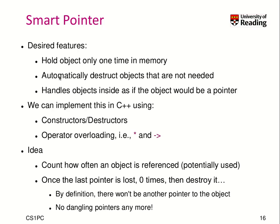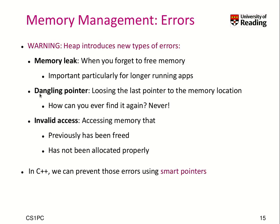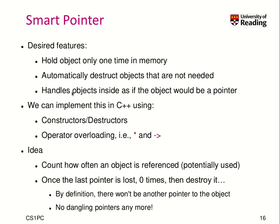What is also smart is that we would like to destruct the object automatically if the object is not needed anymore. So if we would produce a dangling pointer and a memory leak, we would free the object. We want the convenience of the object such that it looks like a pointer, and we can do this in C++ using constructors, destructors, and operator overloading — in particular, overloading the star and arrow operators.